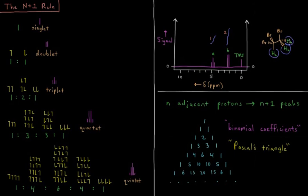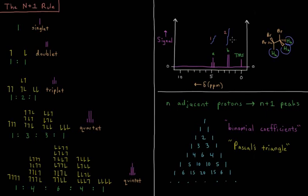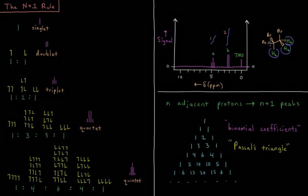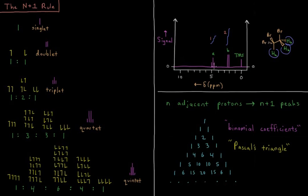So we have a proton here at carbon 1, and we have two protons here at carbon 2. These two protons are chemically equivalent. So this proton sees two protons for it to interact with and couple with. It also has more groups closer to it that are electron-withdrawing, giving it less shielding, so it's at a higher chemical shift.